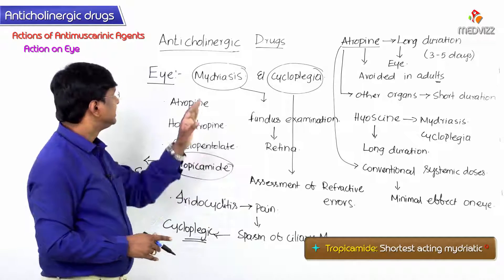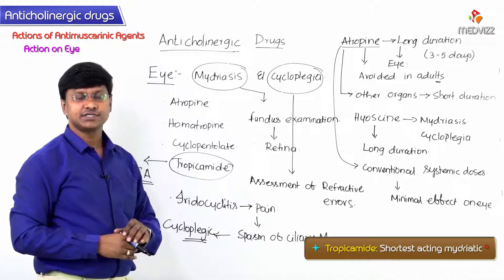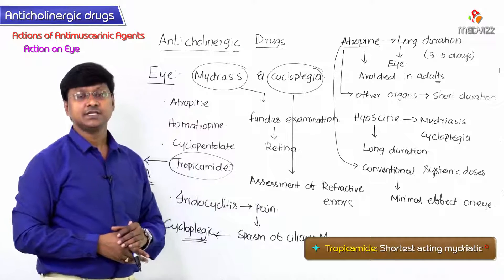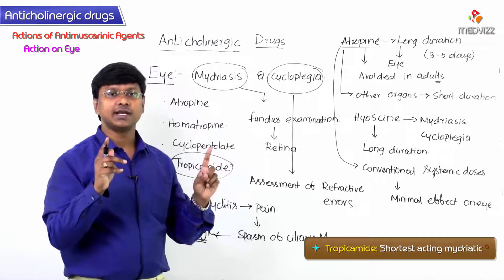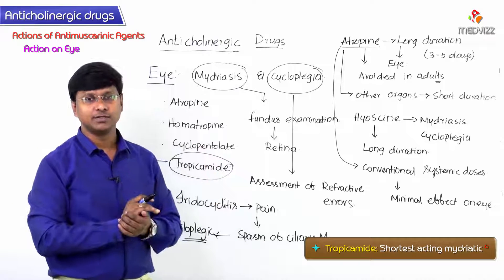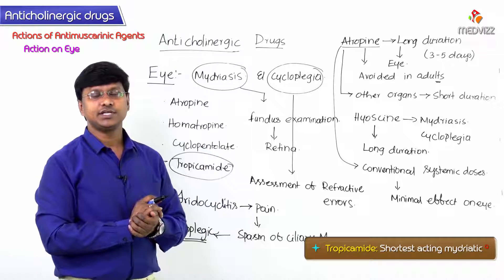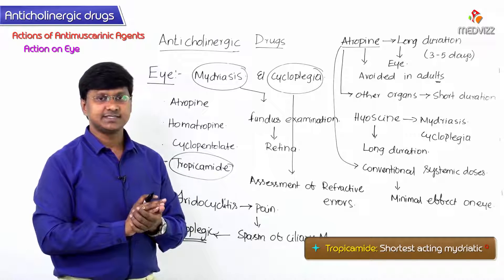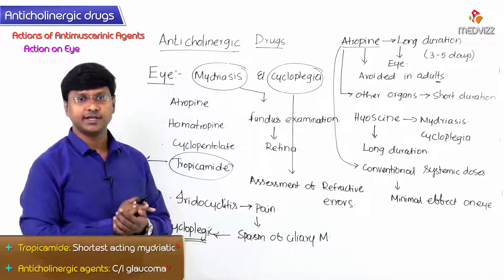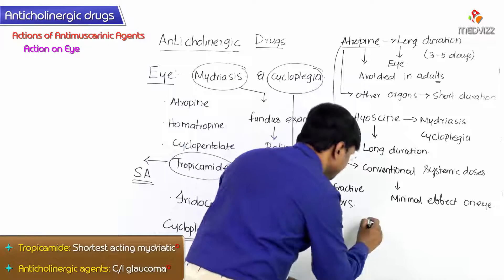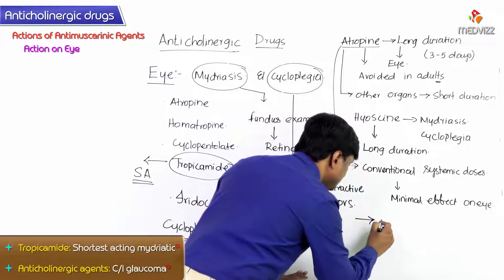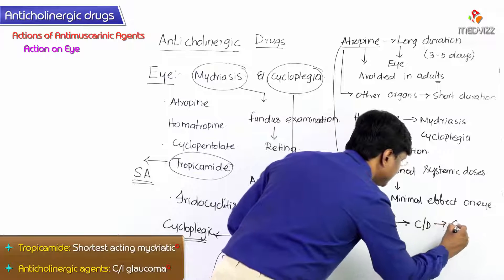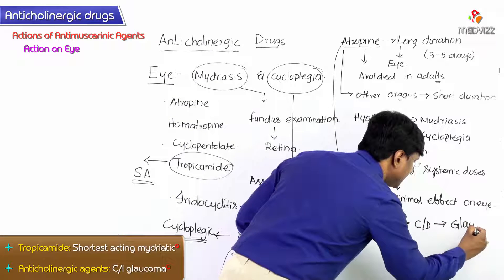Because anticholinergic drugs cause mydriasis — that is, dilatation of the pupil — these drugs are contraindicated in cases of glaucoma, because they will further increase the intraocular pressure. That is the reason why anticholinergic drugs are contraindicated in the treatment of glaucoma.